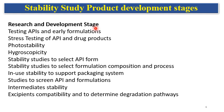In the research and development stage, stability is done to get the finalized formulation or drug substance and process, including testing APIs and early formulations. Stress testing of API and drug products involves stability studies with higher accelerated conditions to study the intrinsic stability of the API and formulations. Photo stability involves studying the effect of light. Hygroscopic studies involve the effect of moisture. Stability studies for API form selection are done to understand the most stable and least stable form of the API.